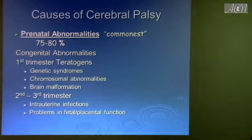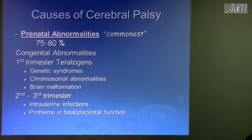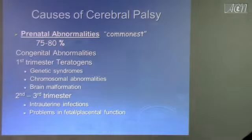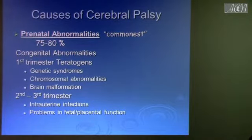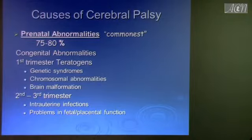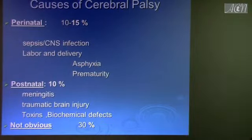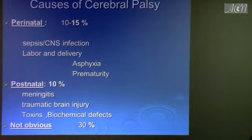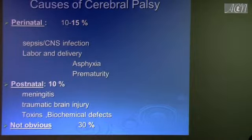What is the most common cause of cerebral palsy? Prenatal cause: 75 to 80 percent. These are common exam questions. Congenital abnormality, whether in the first trimester — genetic, chromosomal, brain malformation — or second/third trimester: intrauterine infection, problems in fetal or placental function. Perinatal cause: 10 to 15 percent. Postnatal cause: 10 percent — for example, a patient who has a car accident developing bilateral injury and spasticity can still be called spastic cerebral palsy even though it's postnatal.